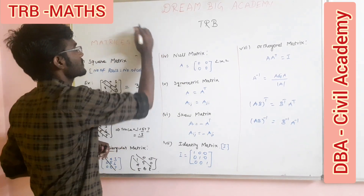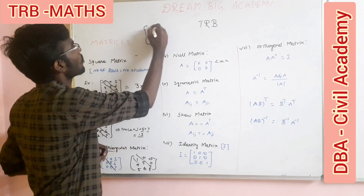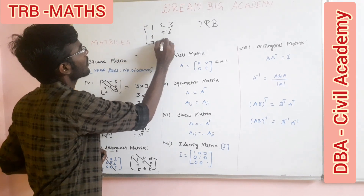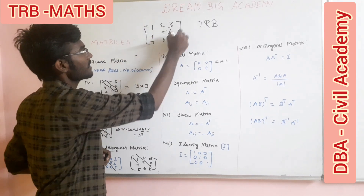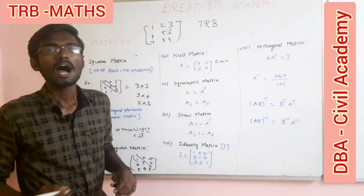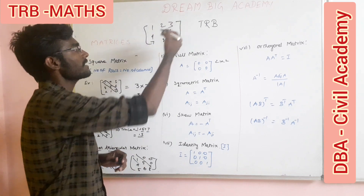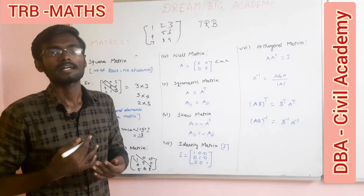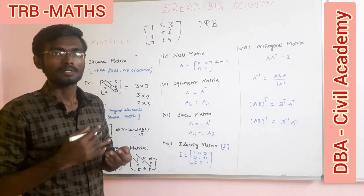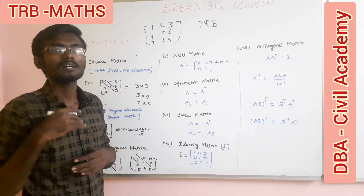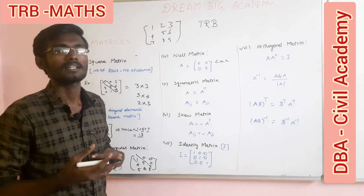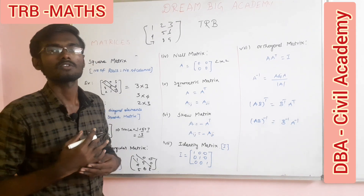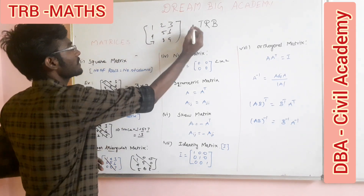Now, symmetric matrix. Consider a matrix with elements one, two, three, four, five, six, seven, eight, nine. In a symmetric matrix, the rows and columns are interchanged — that is, rows and columns are transposed. When you swap them, you get the transpose.